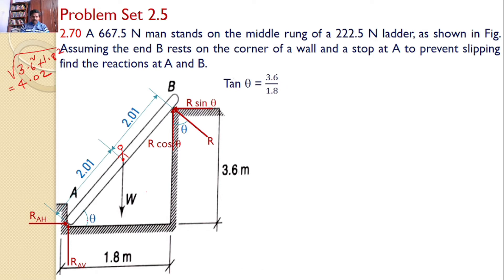I can find the value of theta. Tan theta equals the opposite side, 3.6, divided by adjacent side 1.8, which gives the value 63.44 degrees.